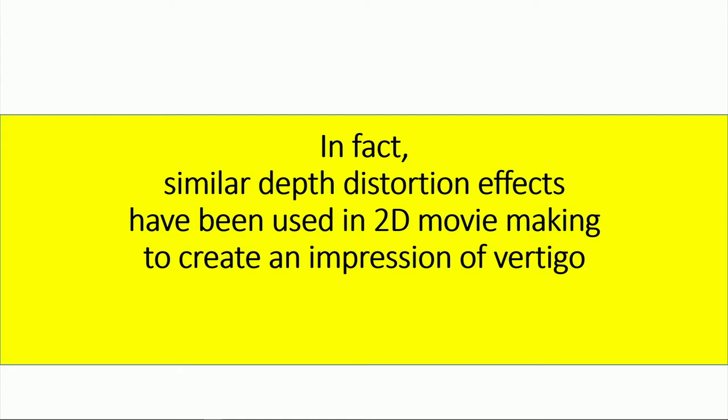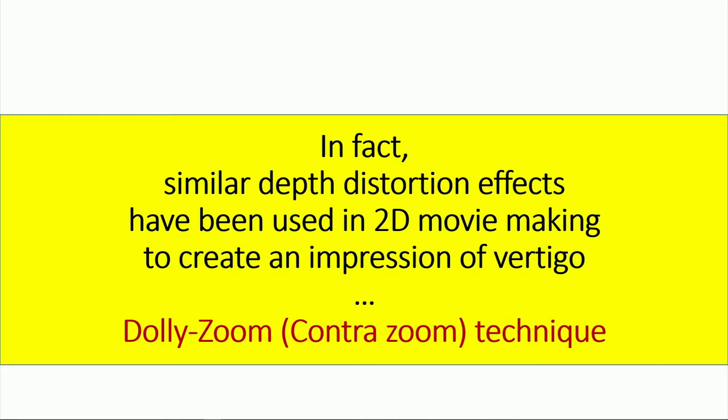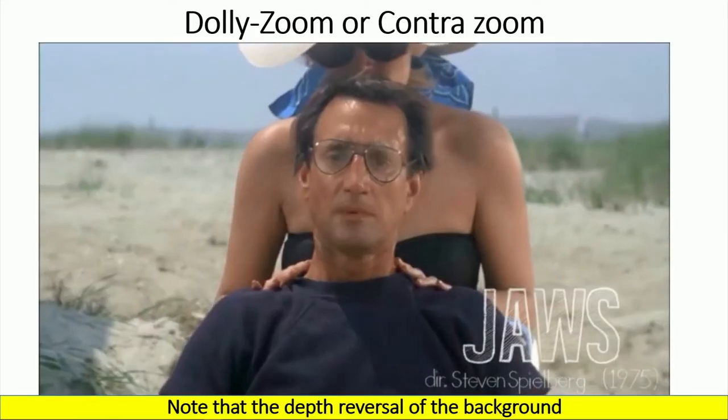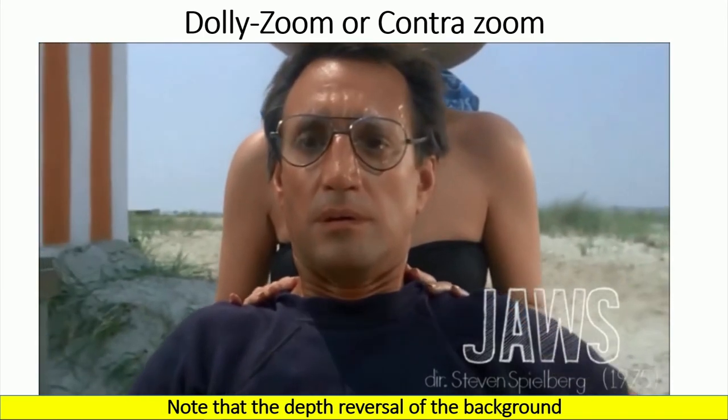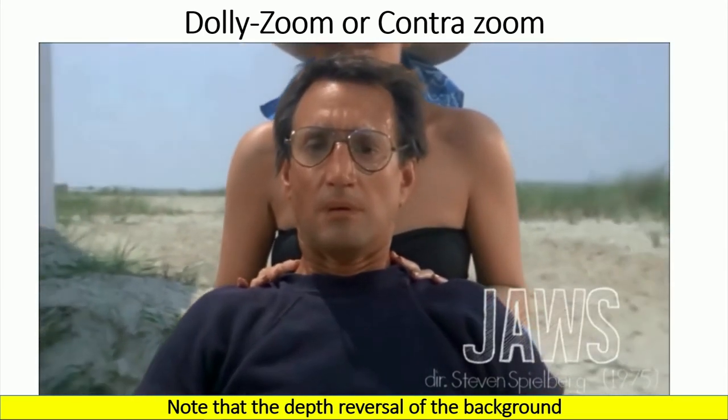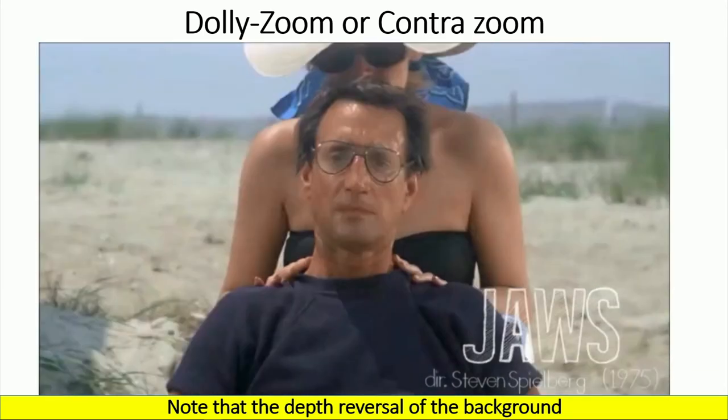In fact, similar depth distortion effect has been used in 2D moviemaking to create an impression of vertigo without using the stereo depth cue. It's called the dolly zoom. Something like this. You can see that the far object seems to be moving backward even though the camera is staying in the same position.